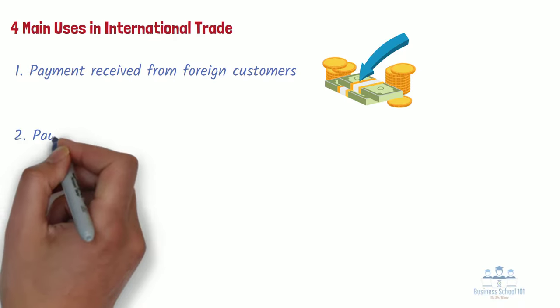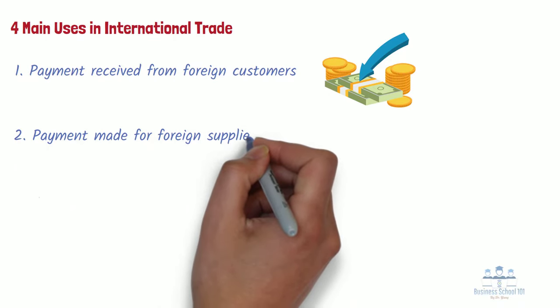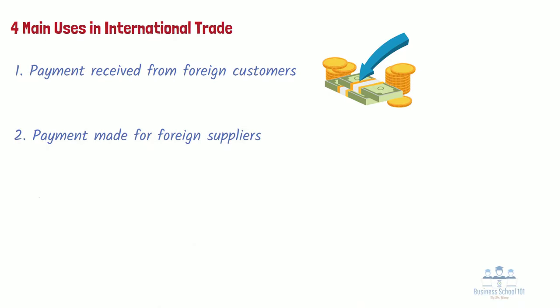Second, payment made for foreign suppliers. International businesses use foreign exchange markets when they must pay a foreign company for its products or services in its country's currency. For example, Walmart buys many products from China. The Chinese companies must be paid in Chinese yuan, so Walmart must convert their dollars into yuan to pay them.